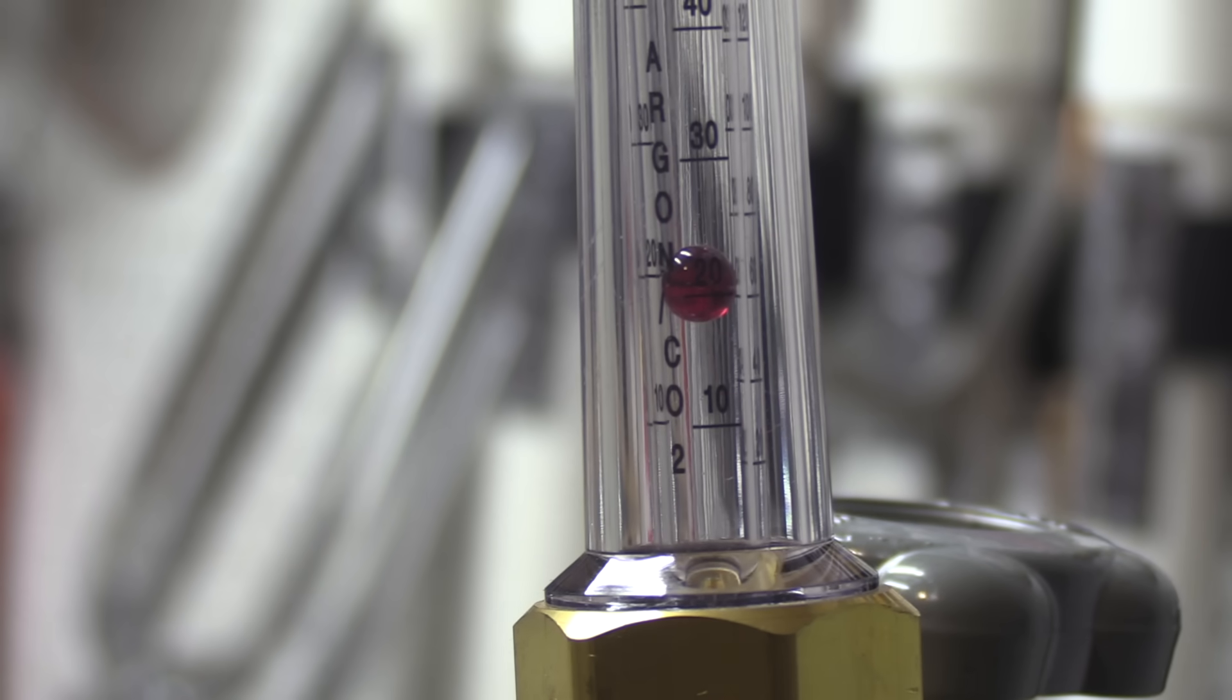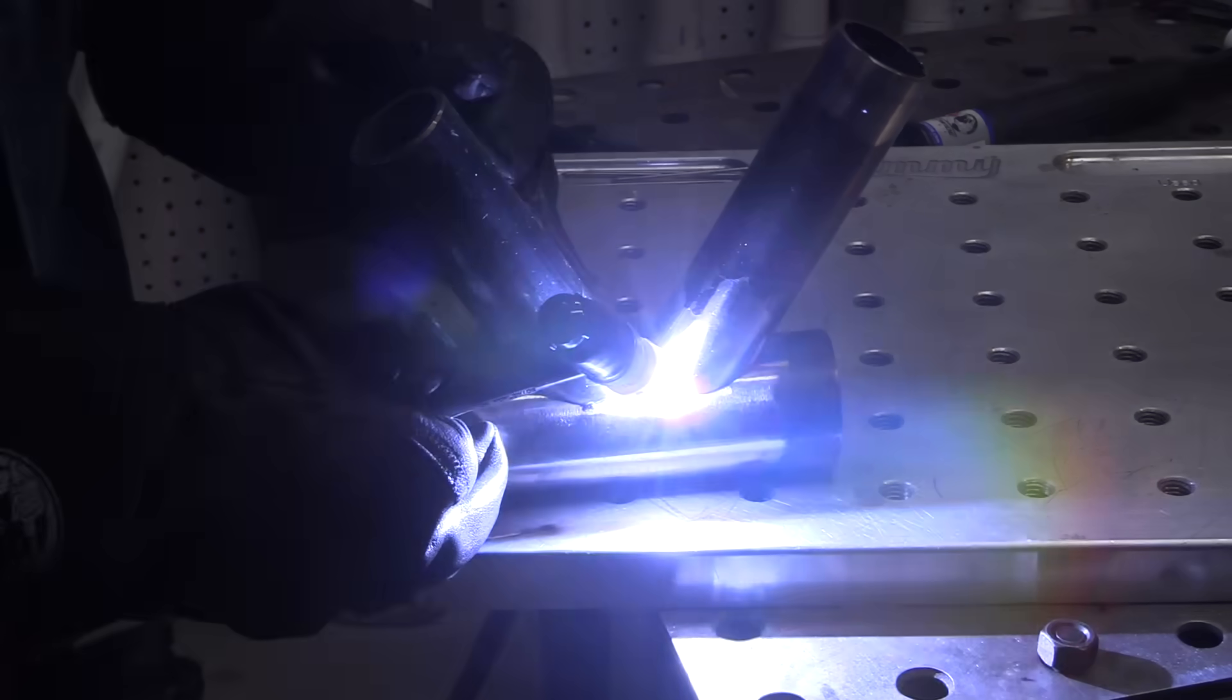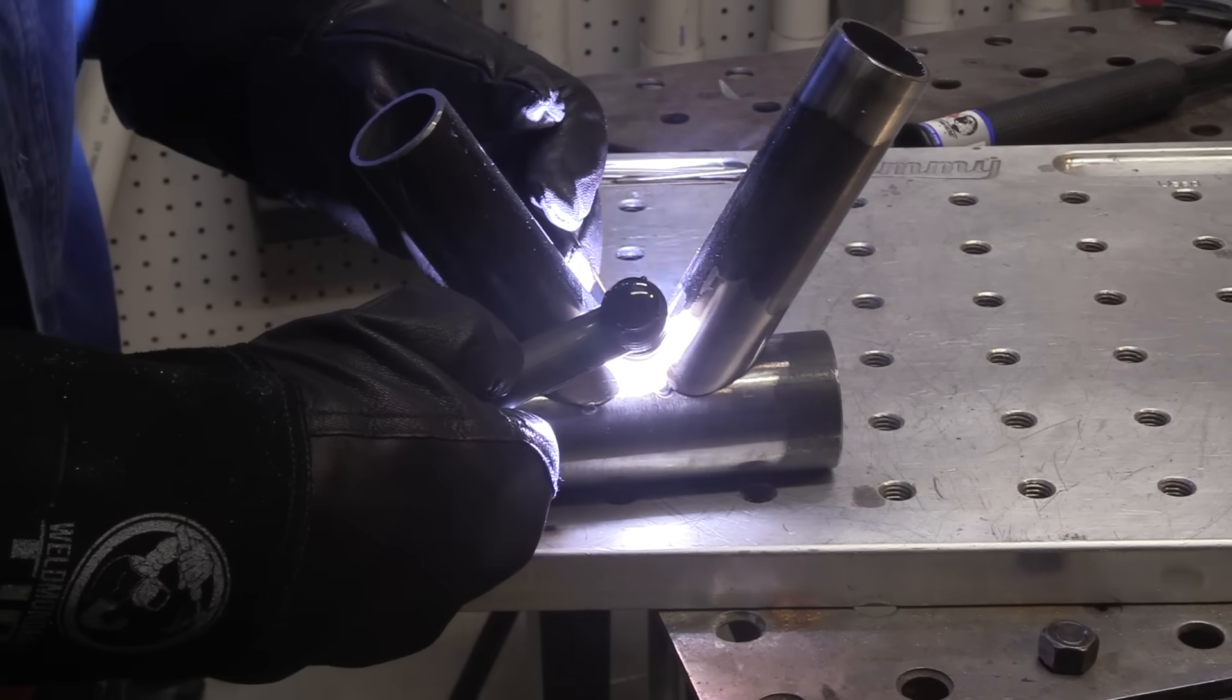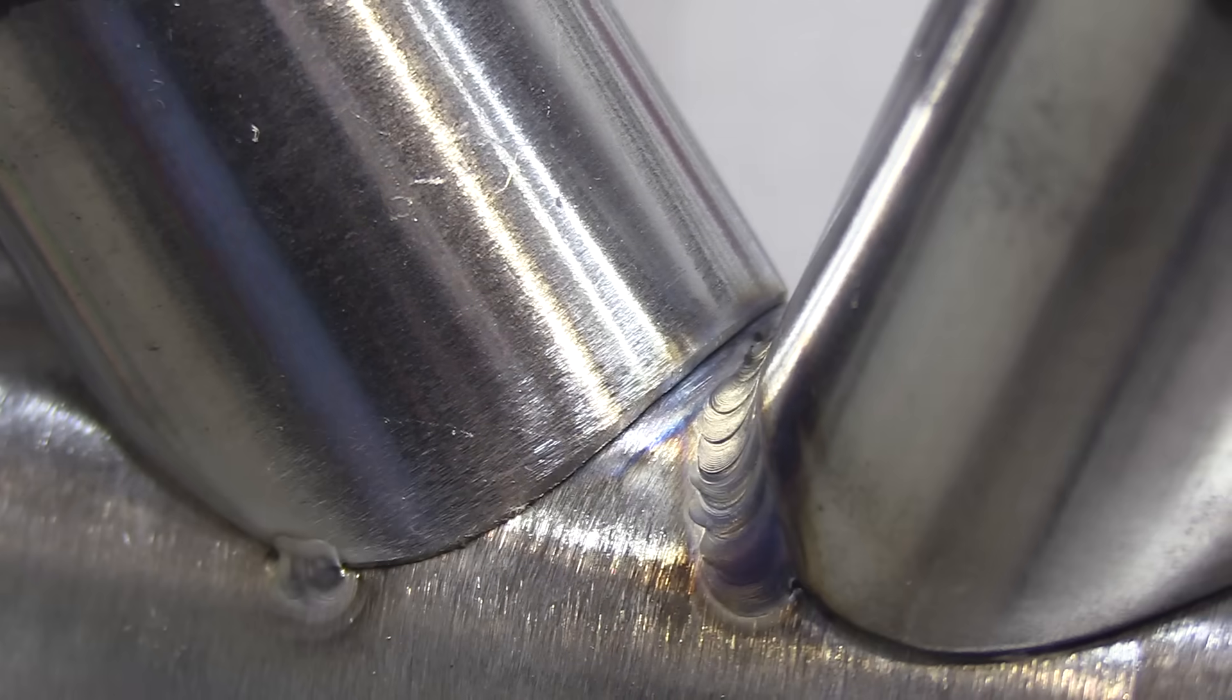I'm gonna be using 20 CFH, which is not a lot for a number 10 cup. That's another thing I like about this cup—it doesn't require any more gas than a number 8 typically, except when you really use a really long stick out, and we'll show that later.